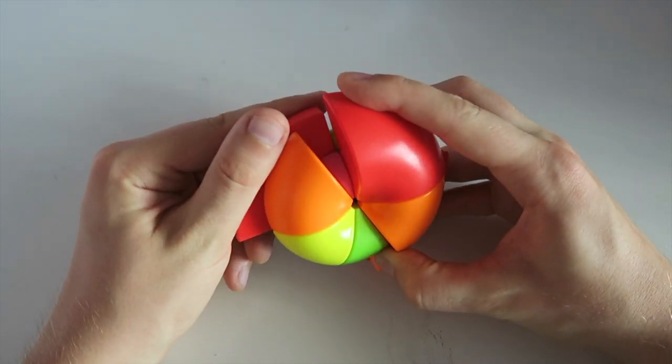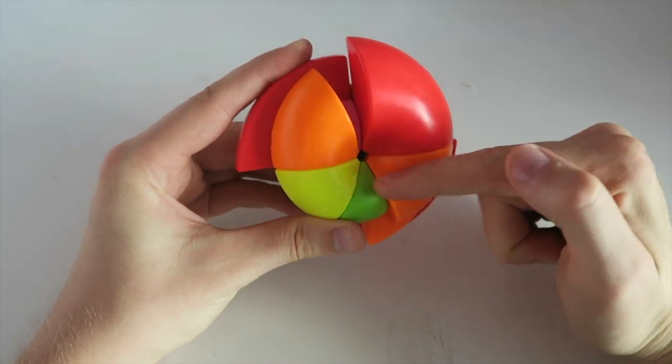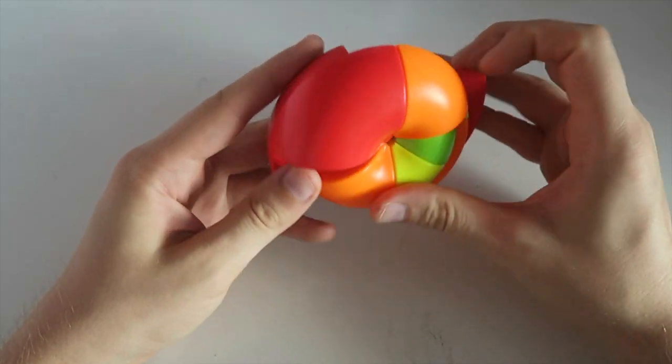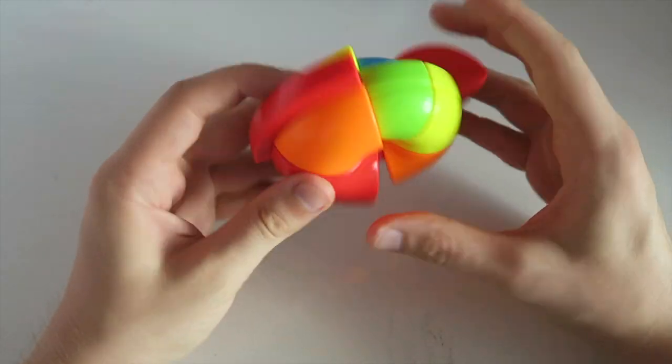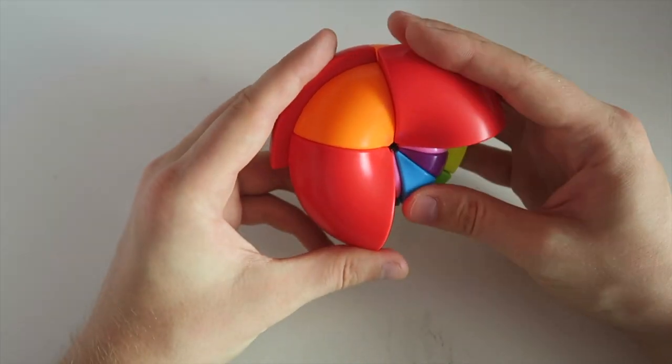Sometimes it will be ever so slightly off and it simply does not work. And you can maybe force it, but like here, obviously you can't do the slice because this guy is here. So yeah, I have a fairly good understanding of this puzzle, but I guess we're going to try and solve it now.